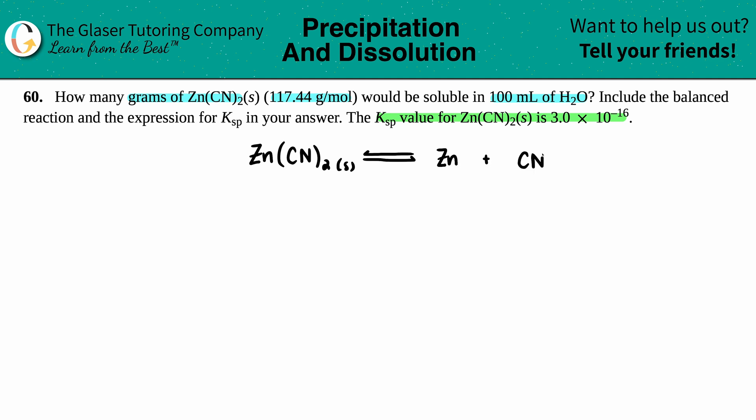The charges can be found by looking at the subscripts. There was one zinc that criss-crossed, telling me the CN is negative one charge, and the two criss-crosses tell me the zinc was plus two. I have two cyanides, so I need to put a 2 in front of the CN minus.